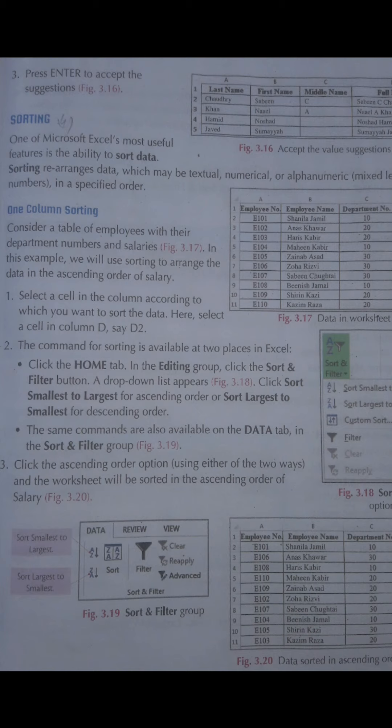اب ہم دیکھیں گے کہ one column sorting — یعنی ایک column کے اندر data کیسے ترتیب دیتے ہیں۔ اس process کے لیے سب سے پہلے Excel کی sheet کے اندر data enter کرنا پڑے گا، جیسا کہ page number 33 پر figure number 3.17 کے اندر دیکھ سکتے ہیں جہاں employee کا data add ہے۔ ہم column D — جو salary والا column ہے — اسے select کریں گے۔